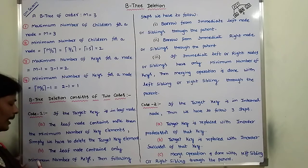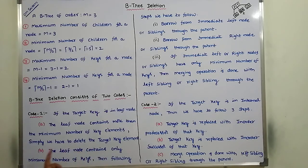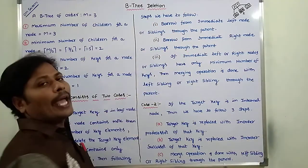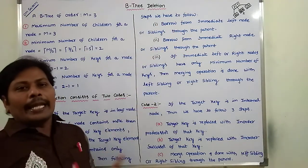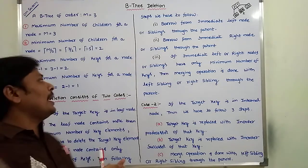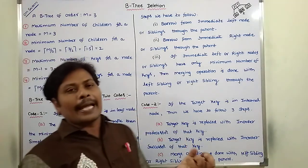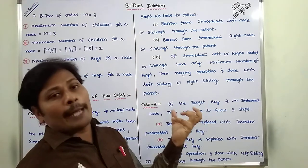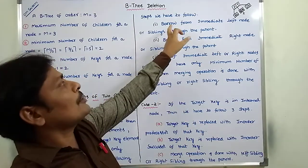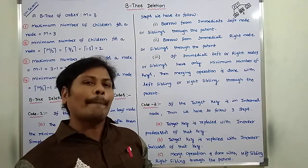Second sub-case: the leaf node contains only the minimum number of key elements, which is 1. Then the following steps must be followed. First step: borrow from the immediate left node or sibling through the parent.